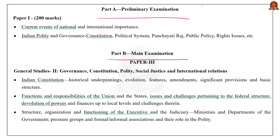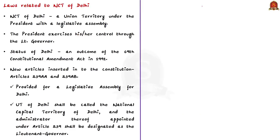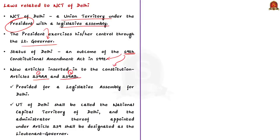The NCT of Delhi is a union territory that comes under the President with a legislative assembly. The President exercises control through the Lieutenant Governor. This present status of Delhi is an outcome of the 69th Constitutional Amendment Act of 1991, which inserted two new articles — Article 239AA and Article 239AB — providing a legislative assembly for Delhi and designating it as the National Capital Territory. The administrator appointed under Article 239 is designated as the Lieutenant Governor.